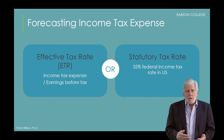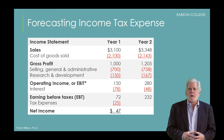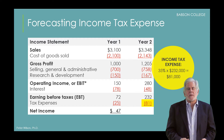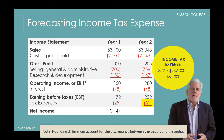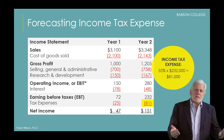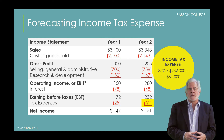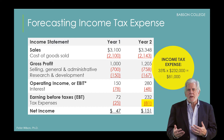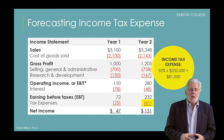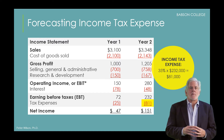For Nebco, our year 2 forecast of earnings before taxes is $228,000. Multiplying that by 35% gives us income tax expense of $80,000 and net income of $149,000. Income tax expense is usually the last item that needs to be forecasted to complete your income statement. Notice how all the expenses are in some way derived from our initial forecast of sales revenue. We'll see that this logic carries over to many of our balance sheet items as well.